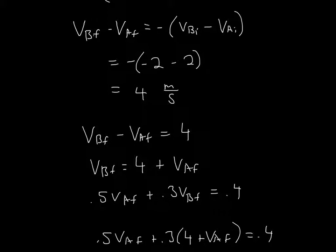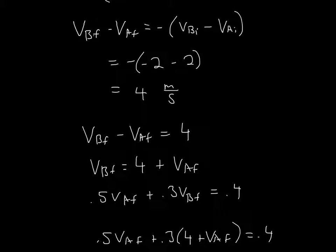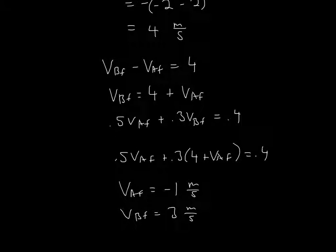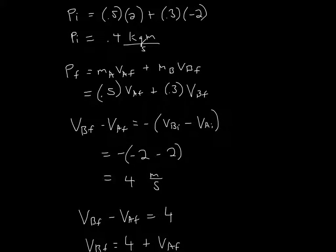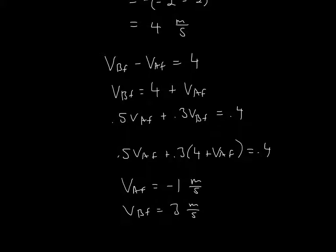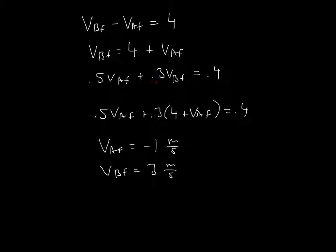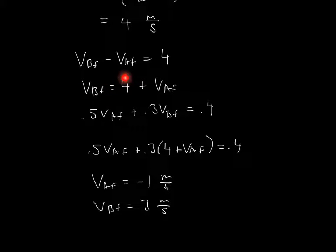So what we can do with this is: the final velocity of B minus the final velocity of A is equal to 4, because this entire thing became 4 when we solved for it. We can rearrange that to say the final velocity of glider B is equal to 4 plus the final velocity of glider A. So now we can solve for the final momentum, because the final momentum has to equal the initial momentum, which we got as 0.4.